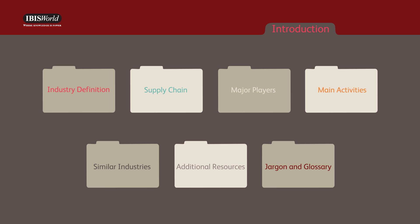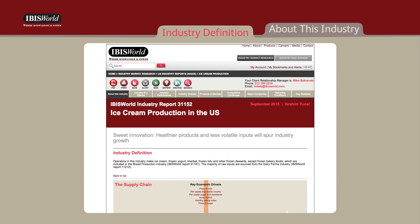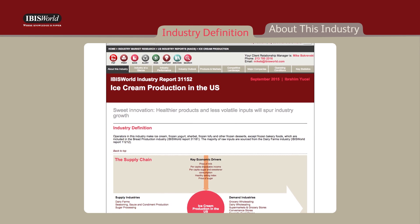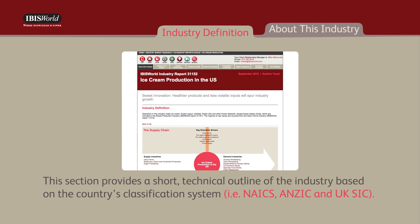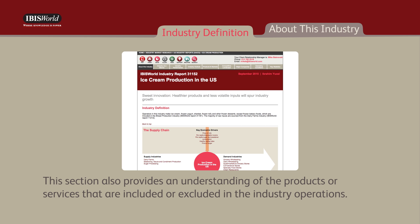You can use this snapshot to quickly assess whether the industry report contains the information that you're seeking. To better understand what's included in the industry, users can turn to the Industry Definition section, which provides a short, technical outline of the industry based on the country's classification system.